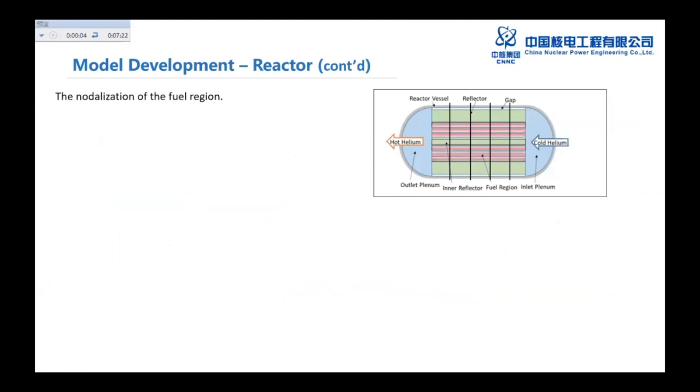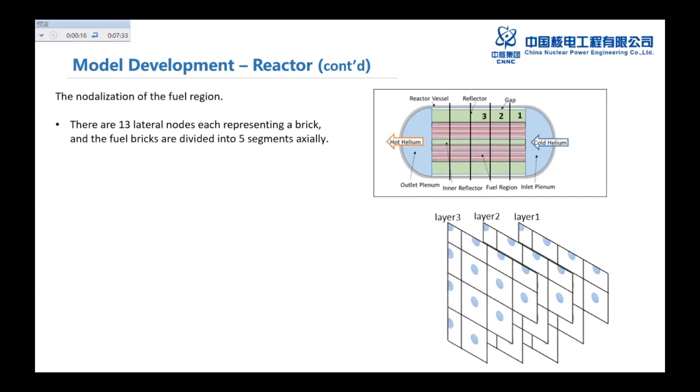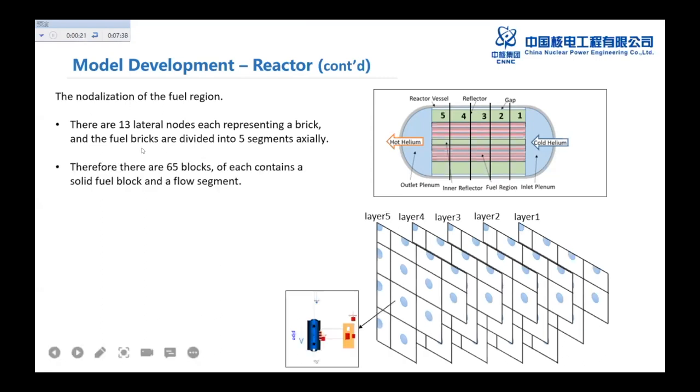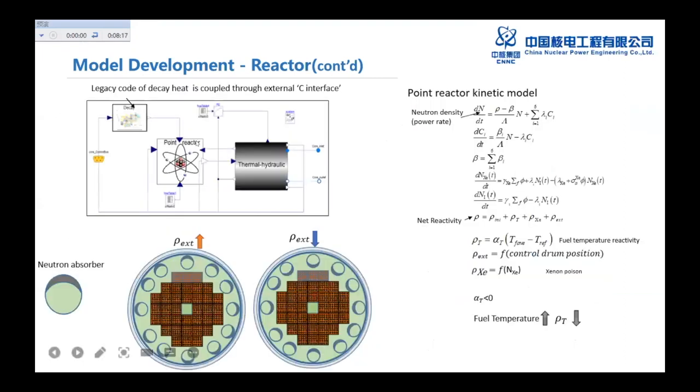This is the nodalization of the fuel region. There are 13 lateral nodes. Each represents a brick. And the fuel bricks divided into five segments axially. Therefore, there are 65 blocks. Each contains a solid fuel block and a flow segment. We use a parallel flow channel to just one flow pipe. But it represents the parallel flow channels. And each solid fuel brick have a heat source, which receives nuclear heat power. And the heat conduction of the three dimensional are modeled here also.